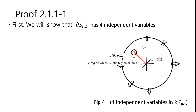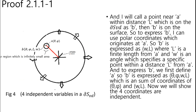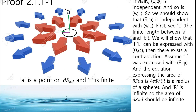First, we will show that DS3D has 4 independent variables. I'll call a point near A with distance L which is on DS3D as B. Then B is on the surface. To express B, I can use polar coordinates which originate at A. So B is expressed as omega L, where L is the finite length from A, and omega is an angle which specifies a specific point within distance L from A. To express B, we first define A. So B is expressed as Zeta Phi, A, omega, L — which is a sum of coordinates of Zeta Phi and omega L. We will show the four coordinates are independent. Trivially, Zeta Phi is independent, and so is omega L.